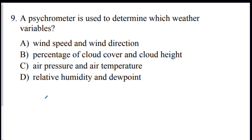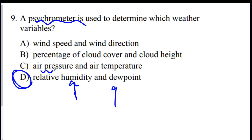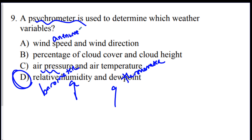Number nine: a psychrometer is used to determine which two things? A psychrometer measures the two things we use those charts for — relative humidity and dew point. Air pressure is measured by a barometer, air temperature by a thermometer, wind speed by an anemometer, and wind direction by a wind vane.